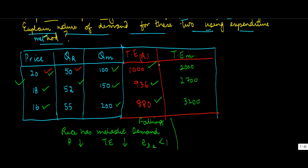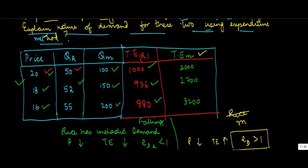Now let's see the case of milk. All along, the price is falling and total expenditure has been increasing. So we say that the elasticity of demand is greater than 1 — in other words, milk has elastic demand.